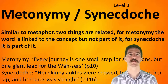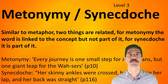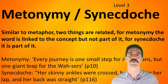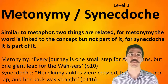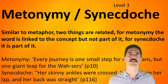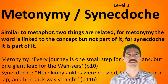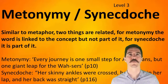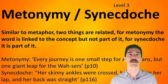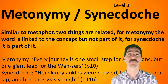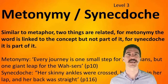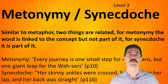Metonymy and synecdoche are the most complicated. Like metaphor and simile, they put two related things close together. For synecdoche, something like 'They called her big mouth because she always spoke' — her mouth is actually part of her, so that's synecdoche. Metonymy would be calling her a 'big talker' — they're related in that she talks a lot, but it's not physically part of her. For metonymy, the example is 'one giant leap for the wah-ers' — they are wah-ers because that's what they say when they see something amazing.